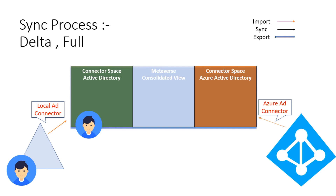Once the import has been completed from on-prem as well as from Azure AD, a sync process will happen between the local AD connector space and the metaverse. This will create an image or replica of the object in the metaverse with a flag called 'add', meaning there is a new user object created that has to be exported to the cloud. This is also the process where all inbound rules you have created will be processed — for example, if you have set the cloud-filtered attribute to true, this object will not be exported to the cloud.